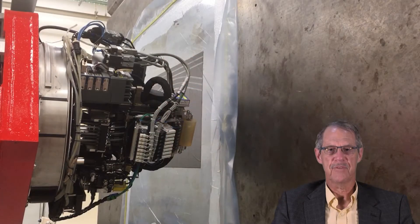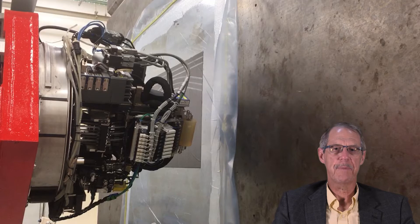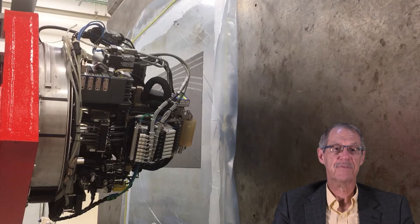Automated fiber placement is a manufacturing process where pre-impregnated fiber toes are heated and deposited onto a mandrel or previously placed toes to fabricate complex composite structures.